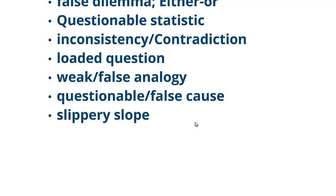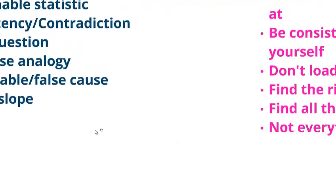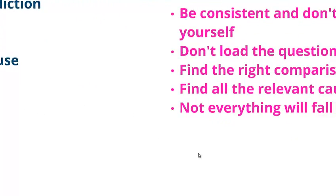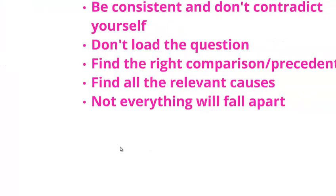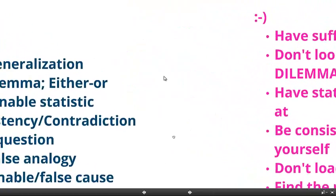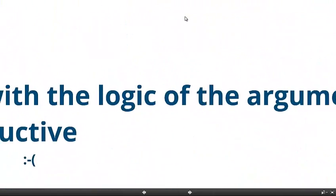Remember that fallacies demonstrate the borderlines of good logic and the beginning of bad logic. Questionable or false cause, sometimes called dubious cause, they all mean the same thing. Slippery slope, that's a different one though, and the names do mean something. Remember, the opposite of that is we want to find the relevant causes and that we know that not everything will fall apart if we propose a solution. We ought not to appeal to the idea that they might fall apart.